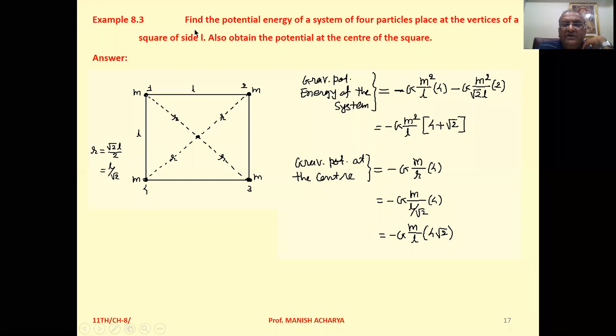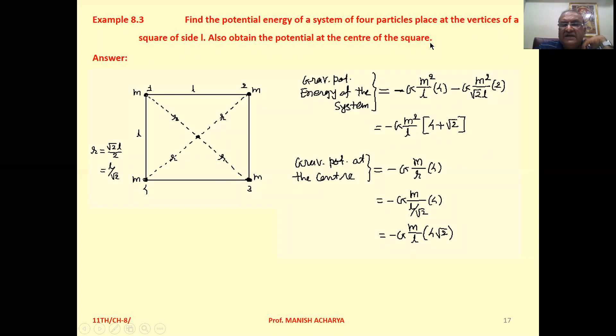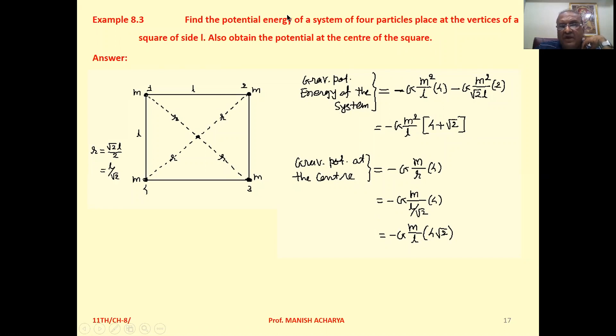Example 8.3: Find the potential energy of a system of four particles placed at the vertices of a square of side L. Also obtain the potential at the center of the square.